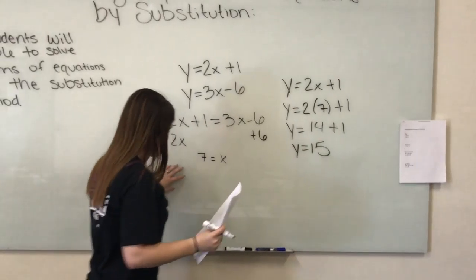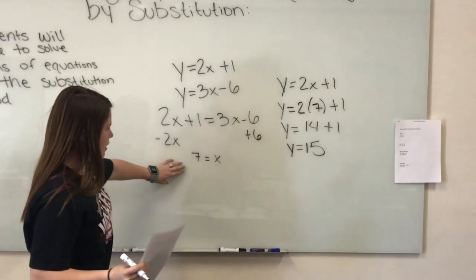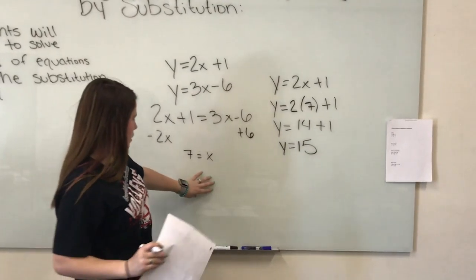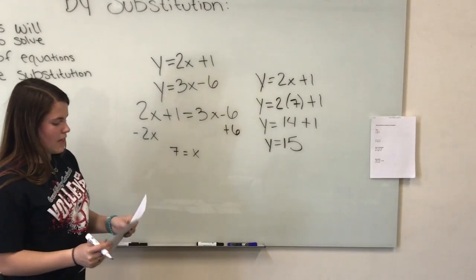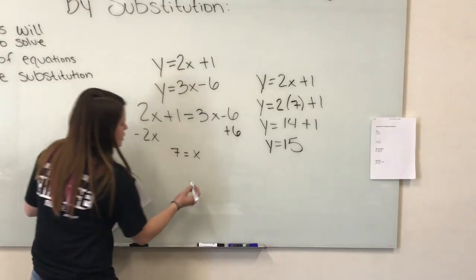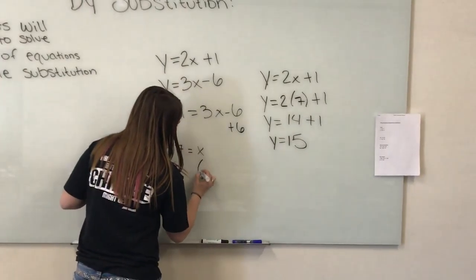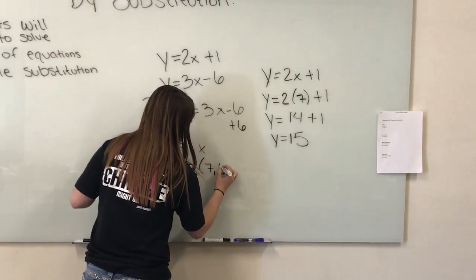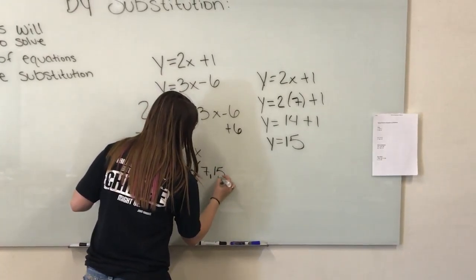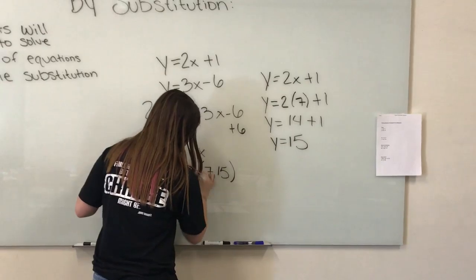Now that you have both variables solved for, you want to write the answer in ordered pair notation with your x value first and then your y value.